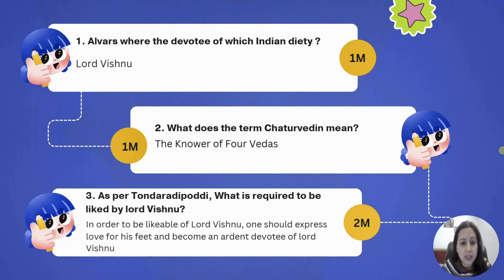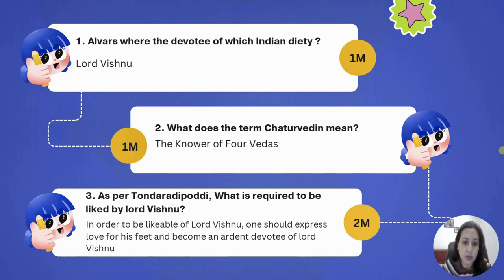Moving on to the next question: what does the term Chaturvedin mean? As you can see from the name itself, Chatur symbolizes the number 4, and Vedin is taken from the word Veda. So the person who knows about all 4 Vedas is known as Chaturvedin.